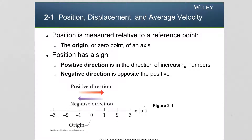In order to describe the motion of an object, it is important to first be able to define or identify the position in space of that moving object. In order to do that, we need a reference frame or a coordinate system in which we are going to measure the position of this object. Since we are dealing with a one-dimensional problem in this lecture, my reference frame will simply be a straight line in which an origin is defined.